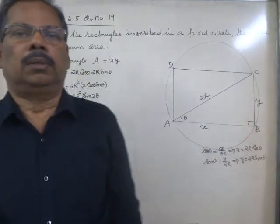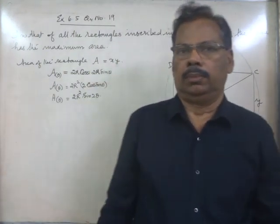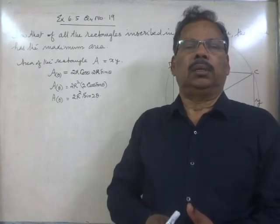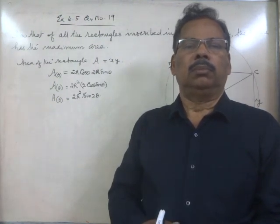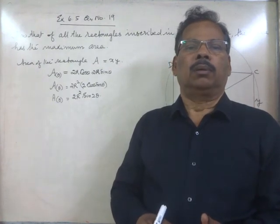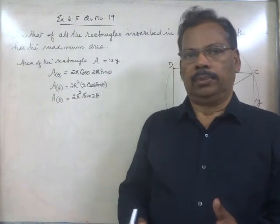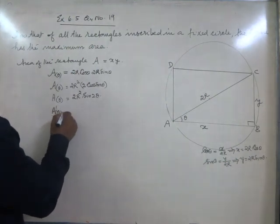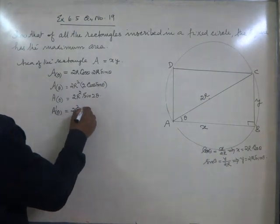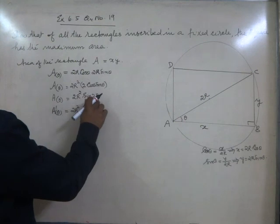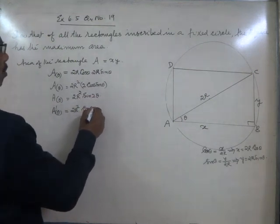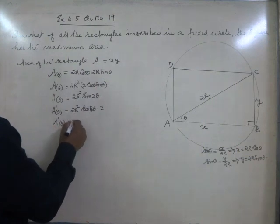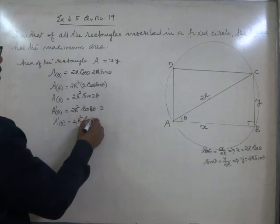For finding maximum or minimum, we have to get the first derivative. When the first derivative becomes 0, we get either a point of maximum, a point of minimum, or sometimes a point of inflection. We shall find A dash theta. That is equal to 4R squared multiplied by the derivative of sin 2 theta with respect to theta, which is cos 2 theta multiplied by 2. So A dash theta becomes 4R squared cos 2 theta.